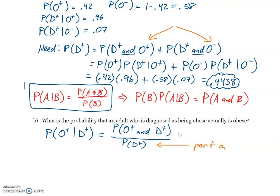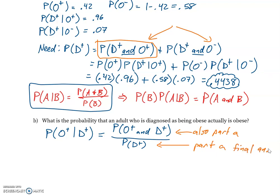The denominator is actually our answer from Part A. The numerator, P(D+ and O+), was also a piece of Part A — and since order doesn't matter for joint probabilities, P(A and B) = P(B and A). So we have (0.42 × 0.96) divided by 0.4438.